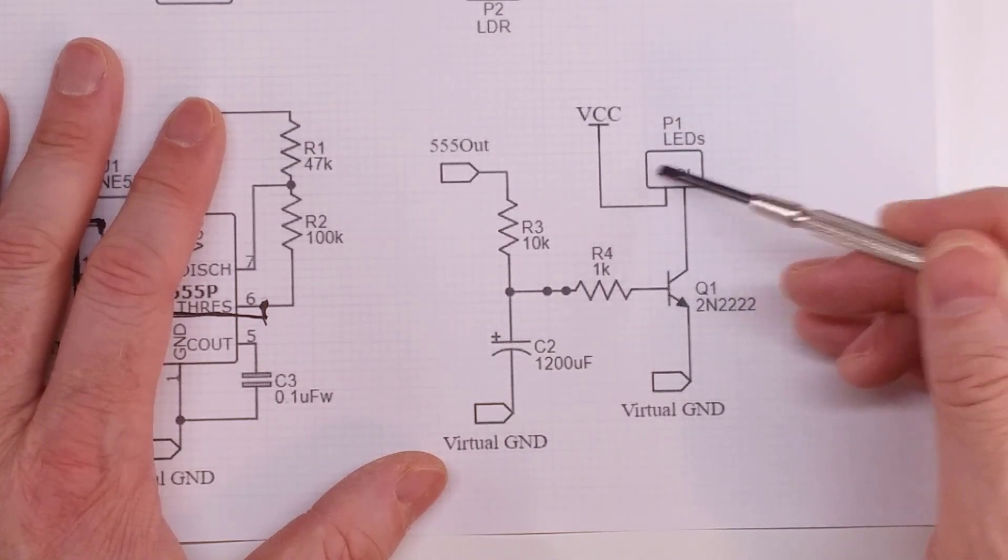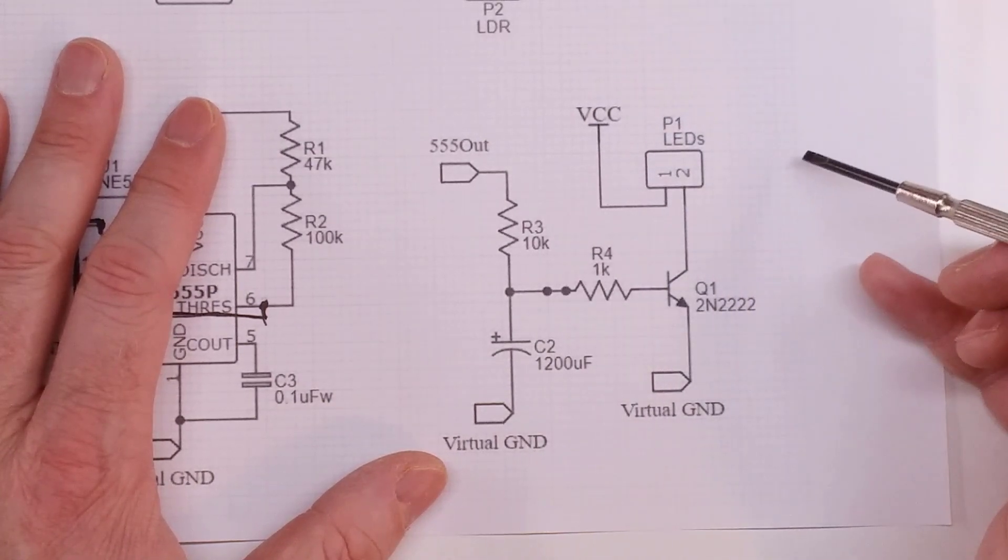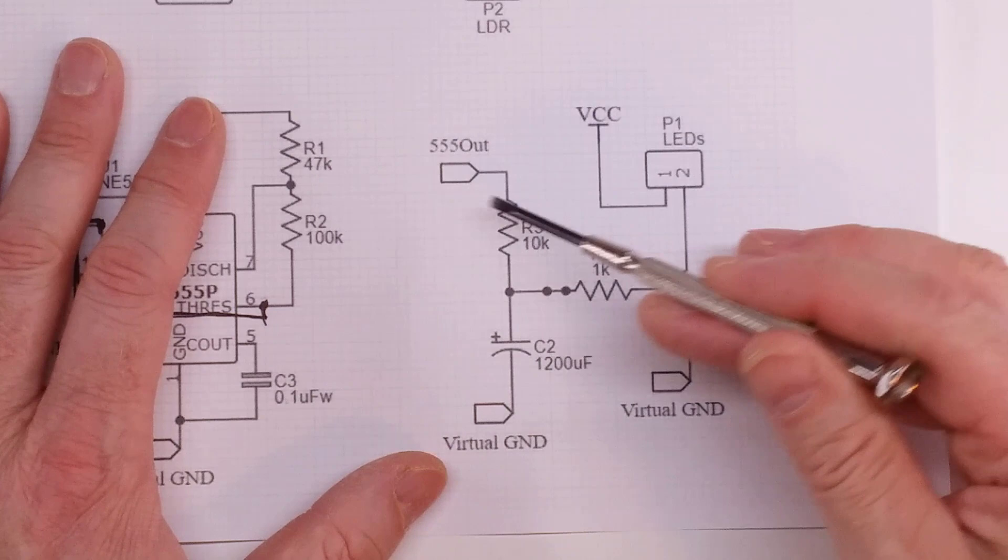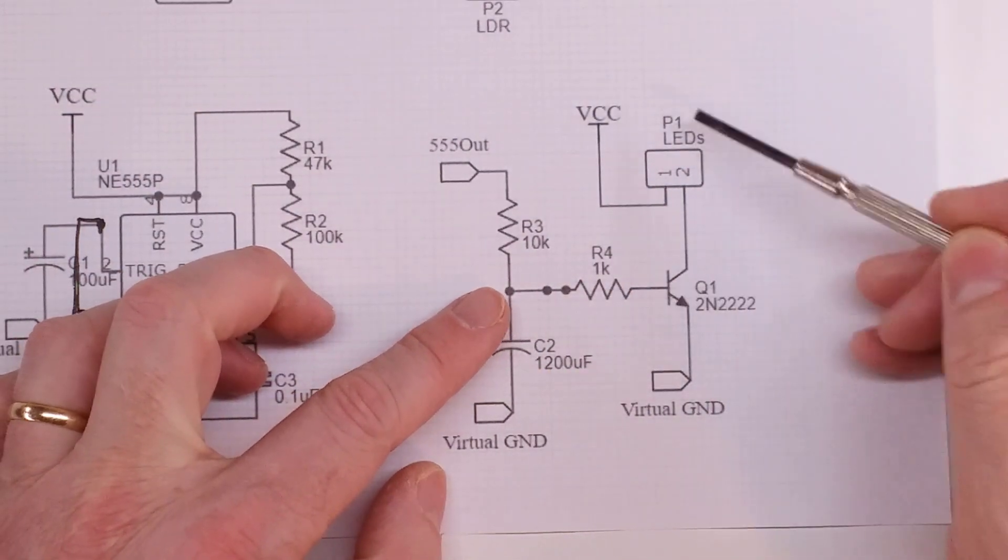So when the 555 turns on and this goes high, what this is going to do is this is going to slowly charge up this capacitor, and it's going to start to turn this transistor on. Now, the reason we have a transistor in here is because we don't know necessarily how many LEDs that we want to be able to run. And by using a transistor, as long as our input current will be sufficient, we can run many different LEDs on this. And so as this turns on, this capacitor starts to charge up, and it's going to turn on the transistor.